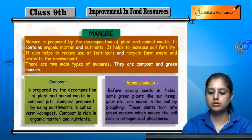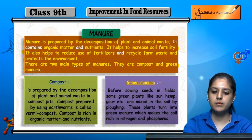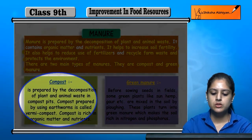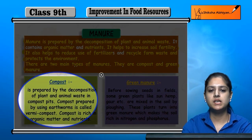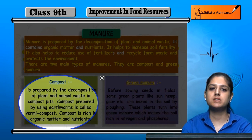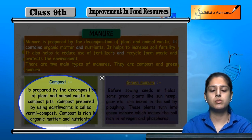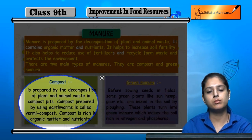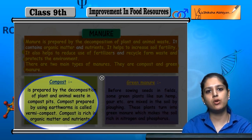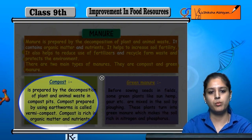There are two types of manure: compost and green manure. Compost is prepared by the decomposition of plant and animal waste in compost pits. The pits are filled with plant and animal waste. Decomposition is carried out by microorganisms. If we add earthworms to decompose them, it is called vermicompost.